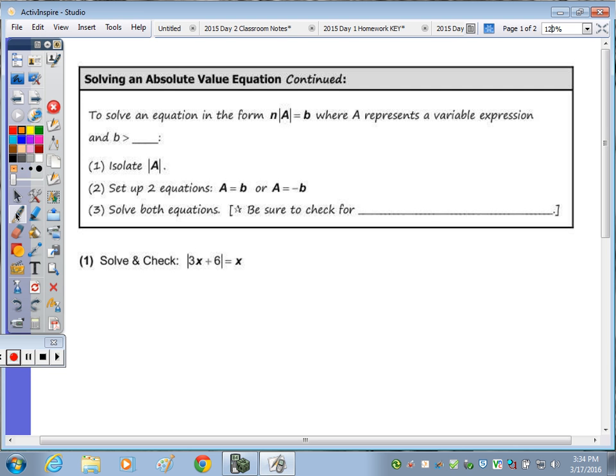Today we're going to be solving absolute value equations. It's still the same process. If you look at the three steps at the top, it's all the same. B still has to be greater than zero. We're still trying to isolate. We still set up our two equations, solving them both, and checking for extraneous solutions.